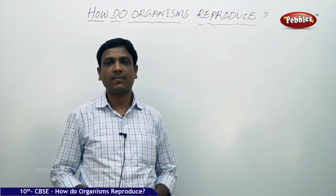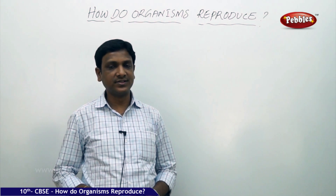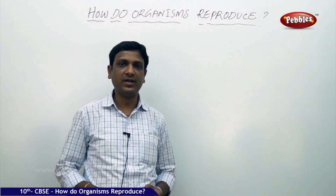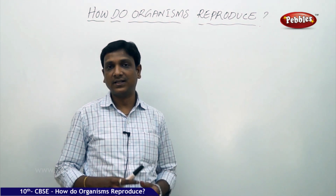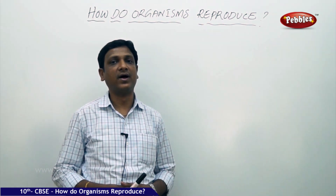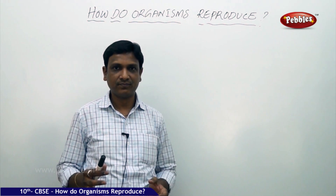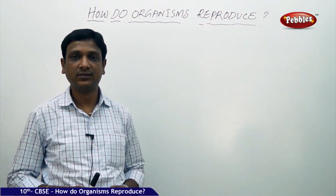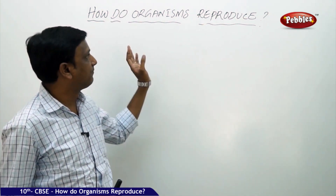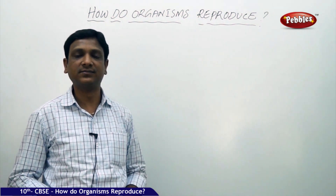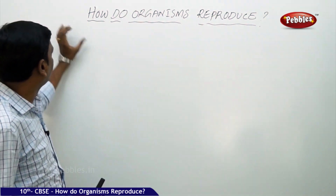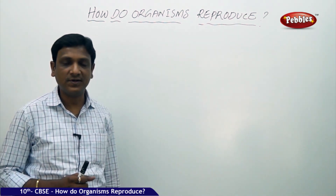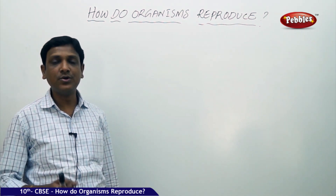How do organisms reproduce? Today we are going to discuss another important life process: reproduction. In the previous chapters we learned about nutrition and other life processes that help organisms survive. An organism needs to carry out many life processes to stay alive. Why do organisms reproduce? That is the first question we need to answer.